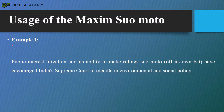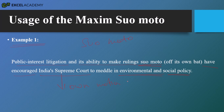Let's look at some examples for a better understanding of what Suomoto means. Example one: the public interest litigation and its ability to make rulings Suomoto have encouraged the Indian Supreme Court to meddle in environmental and social policies. The Supreme Court on its own motion or on its own initiative is taking up matters related to environment and social policy for the well-being of the general public, making rulings Suomoto with respect to environmental and social policies.